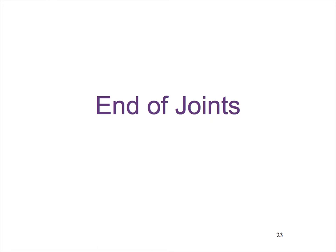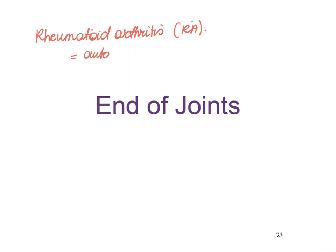There are many kinds of arthritis. Two other kinds to be aware of are rheumatoid arthritis—abbreviated as RA—which, unfortunately, is an autoimmune disease and therefore difficult to treat. It's a pretty devastating and crippling disease.